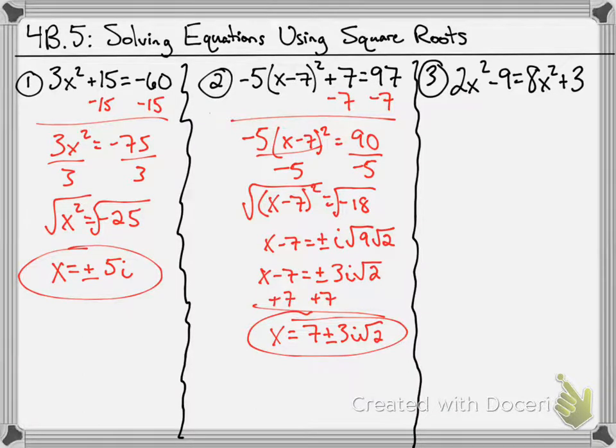Our last problem. Again, the goal is we need to get the term that's being squared all by itself first, and then we'll be able to work in square root and get x all by its lonesome. You'll notice here we've got x squared terms on both sides of the equation. We've got constants on both sides of the equation.